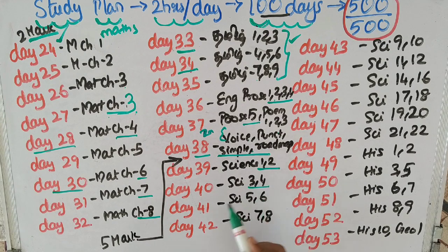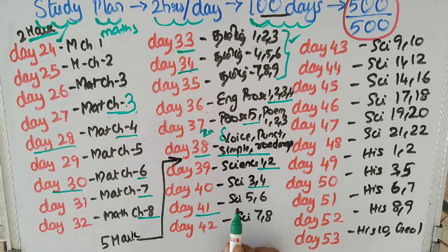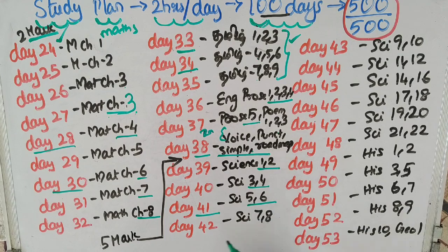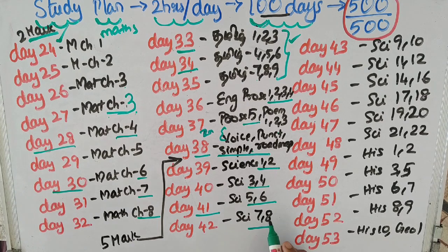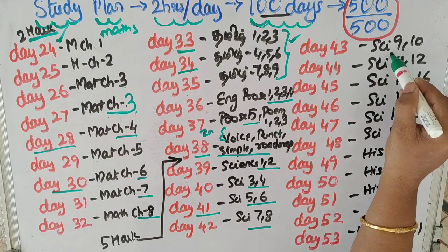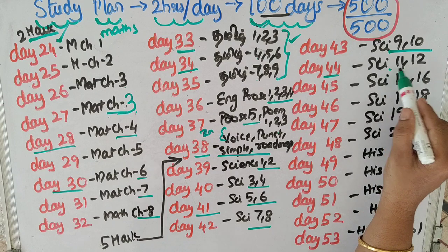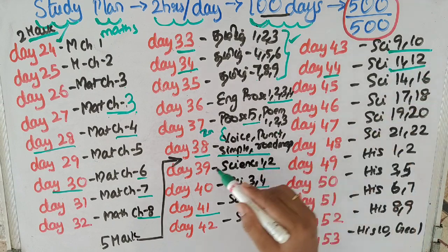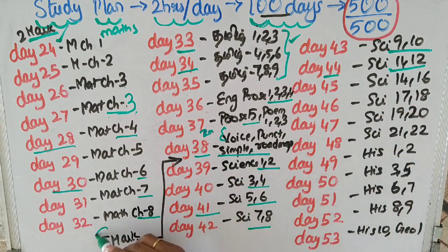Day 39: Science lessons 1 and 2. Day 40: Science 3 and 4. Day 41: Science 5 and 6. Day 42: Science 7 and 8. Day 43: Science 9 and 10. Day 44: Science 11 and 12. Now we do all 5-mark detail questions.